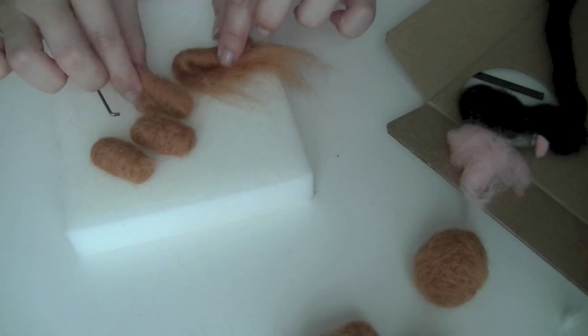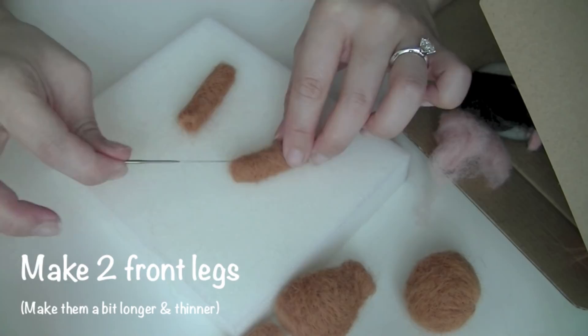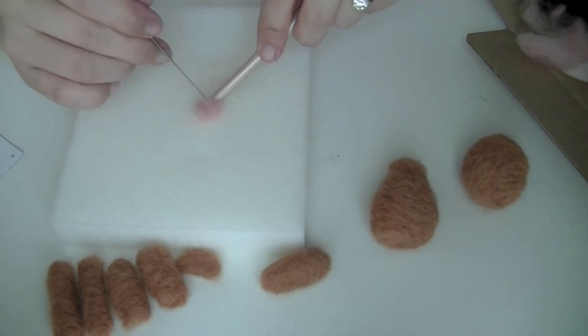Now I'm going to make the front legs slightly longer and skinnier. And of course you're going to need two again. Now last part before we begin to assemble everything together, I'm just going to take a small piece of pink wool and just prick it into a little tongue.